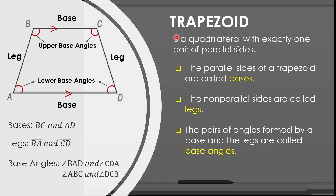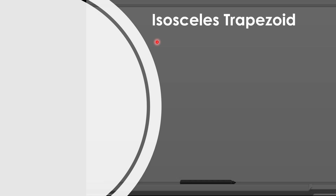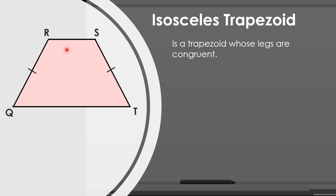Aside from the trapezoid, we have here the isosceles trapezoid. An isosceles trapezoid is a trapezoid whose legs are congruent. Here is an example of an isosceles trapezoid. If you notice in our figure, we have a pair of legs which are congruent to one another.